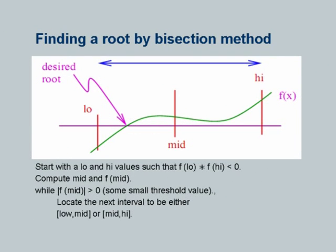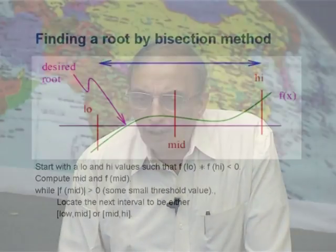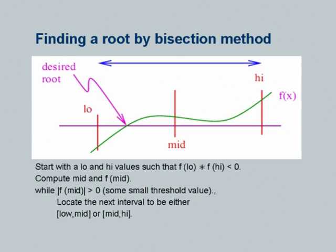Start with low and high values such that f(low) times f(high) is less than 0 — meaning these two function values are of opposite sign, so their product is negative. Compute mid and compute f(mid). Once I have calculated f(mid), I check whether the absolute value of f(mid) is less than some threshold value. It is very difficult in floating point arithmetic to get exact 0, and therefore we talk about a threshold. If f(mid) is still greater than the threshold, I have not found the root, so I find the next interval.